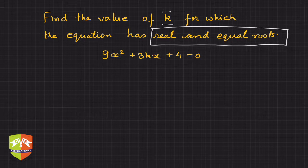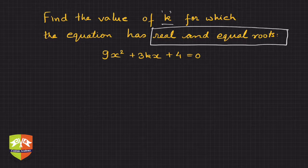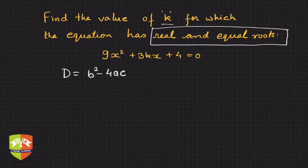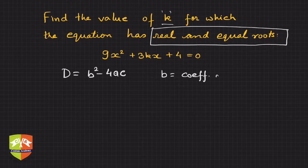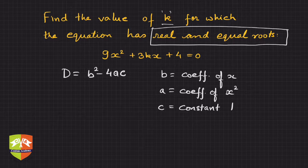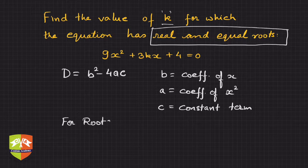The moment we see 'real and equal roots,' the first thing that should come to mind is the value of D. For the condition of roots to be real and equal, the discriminant must be zero. The discriminant is b squared minus 4ac, where b is the coefficient of x, a is the coefficient of x squared, and c is the constant term.